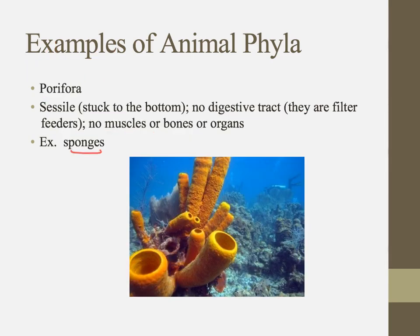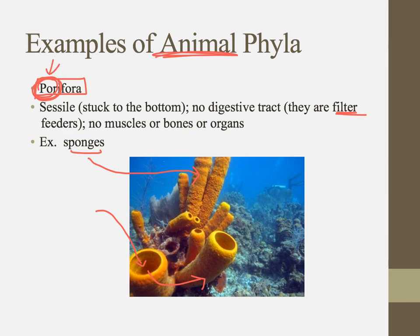Next up are our sponges. If you've been scuba diving or wandered through Bed Bath & Beyond, you've probably noticed these guys. These are actually animals — multicellular, sexually reproducing heterotrophs — and they belong to the phylum porifera. This comes from "pore." They are filter feeders: water flows in and out through tiny pores, and food particles like plankton get stuck inside. They have no digestive tract, are sessile (stuck to the bottom), and have no discernible organs, bones, or tissues.